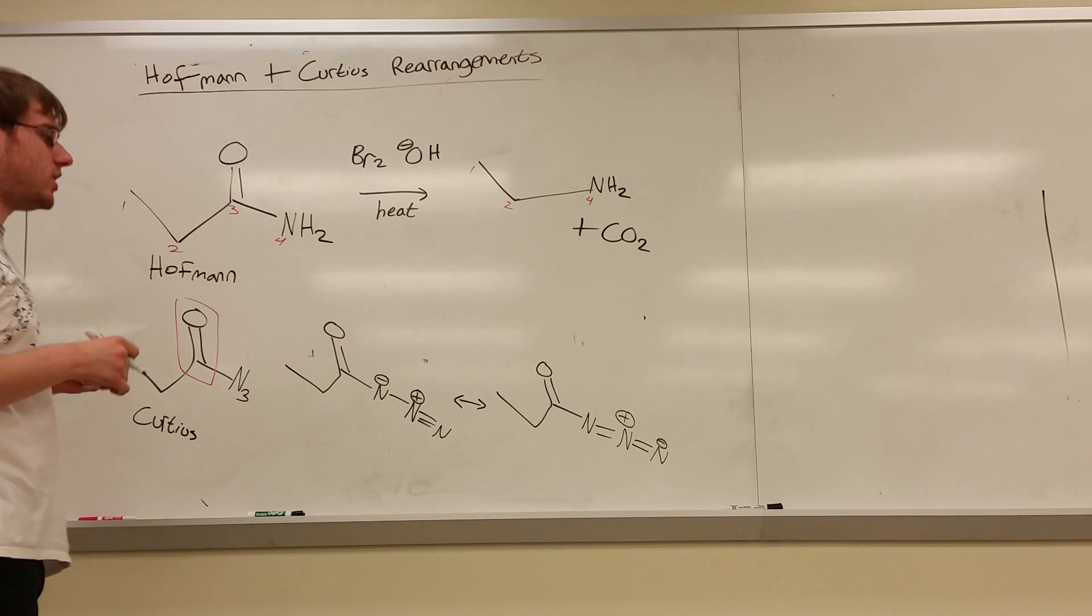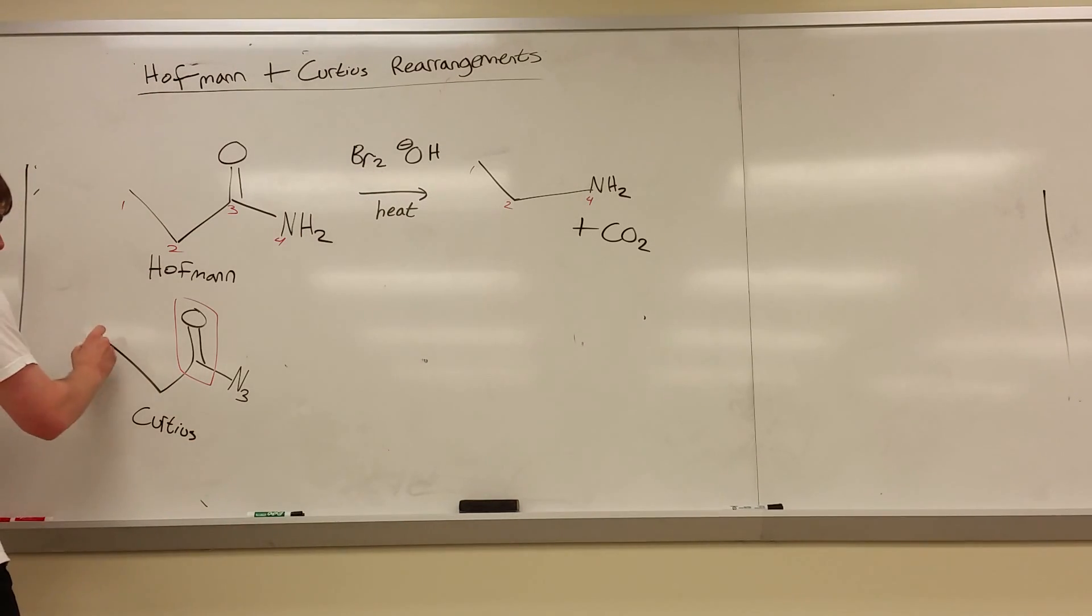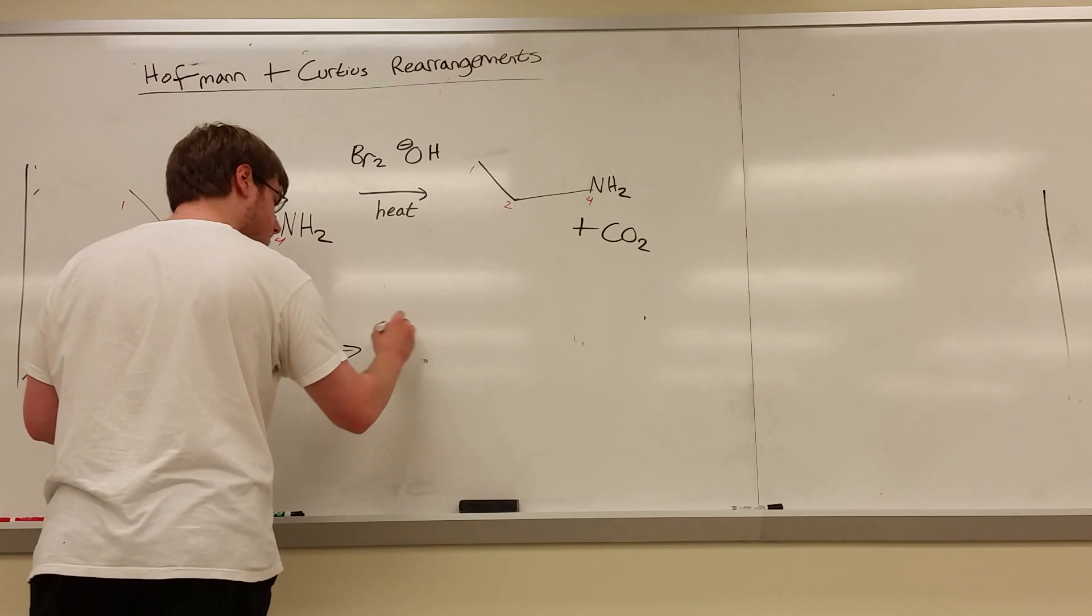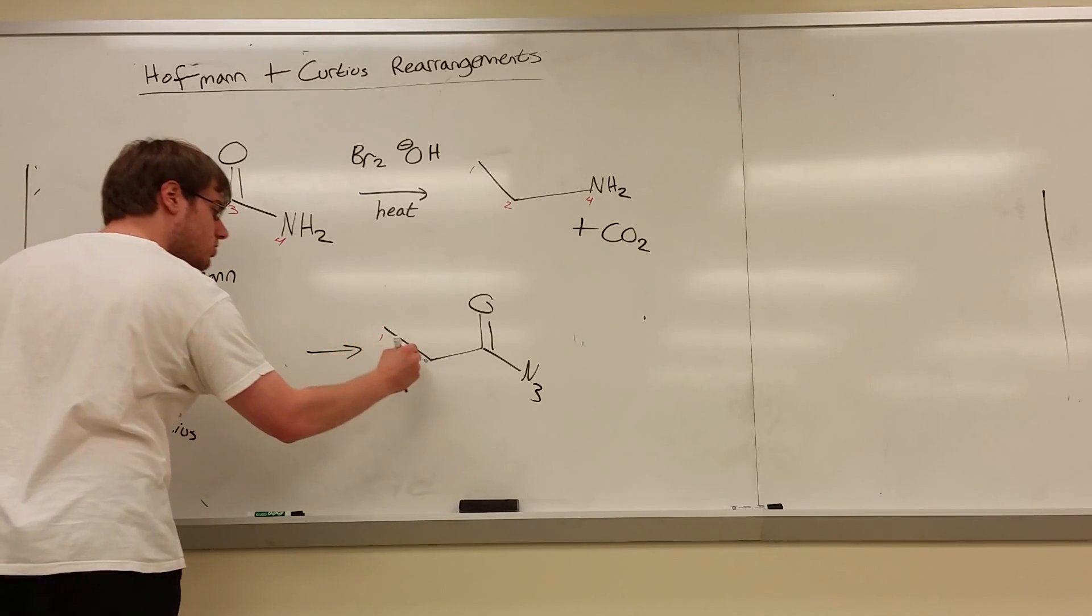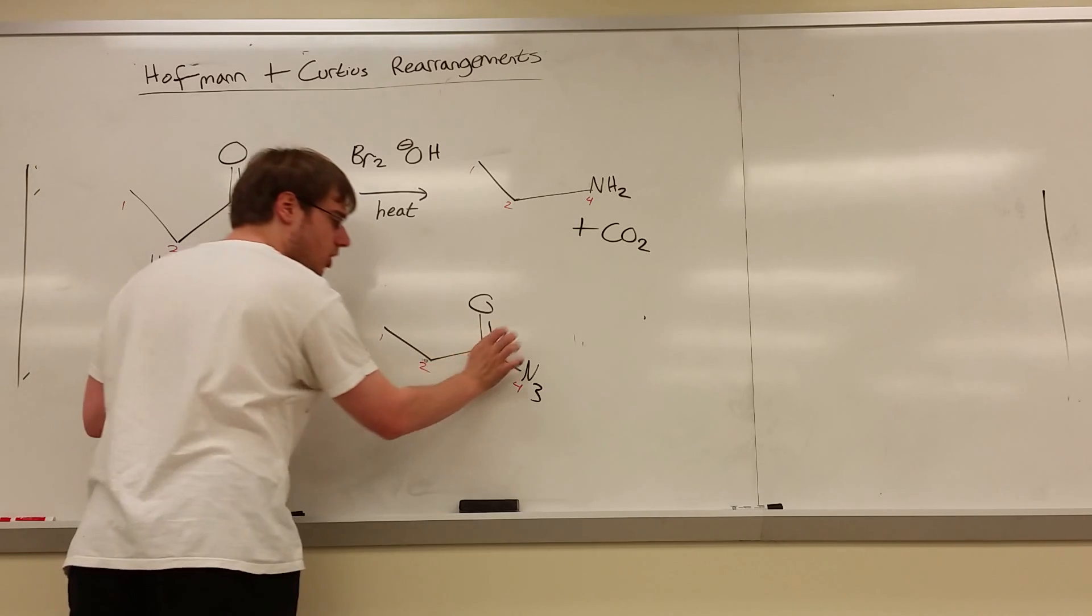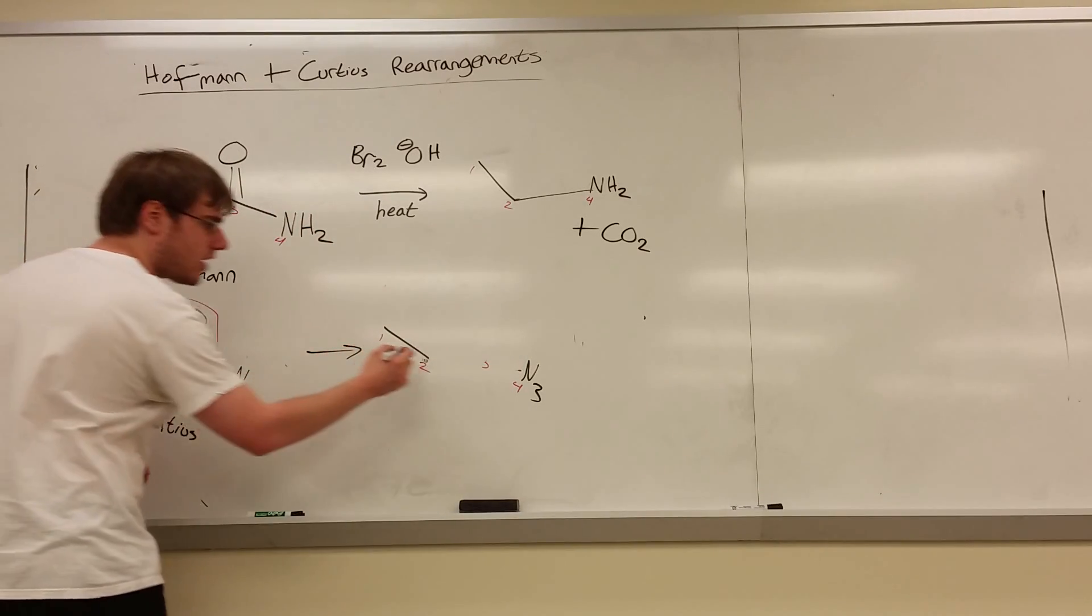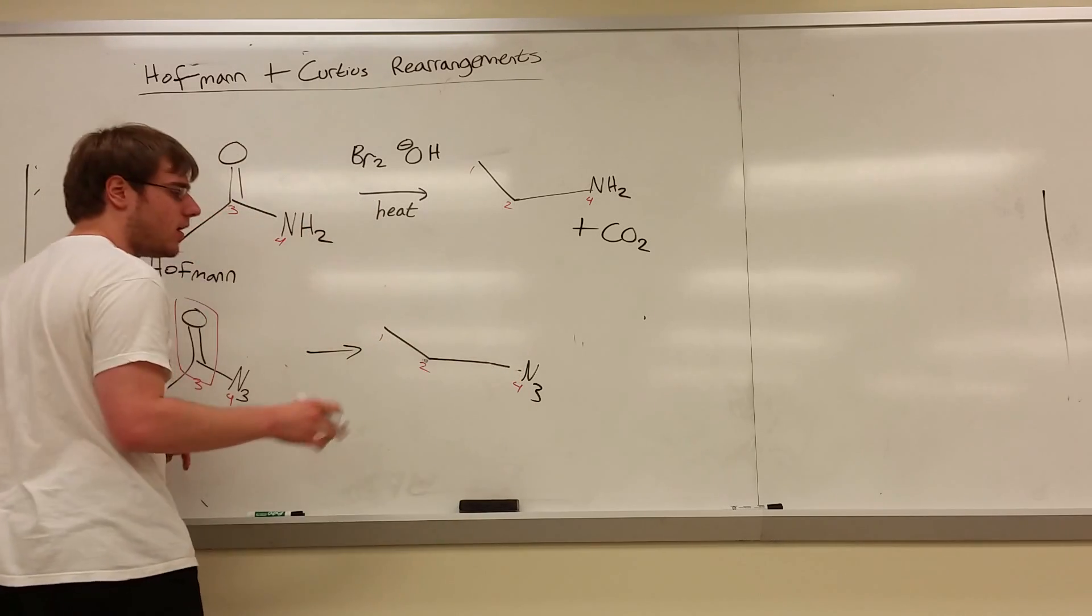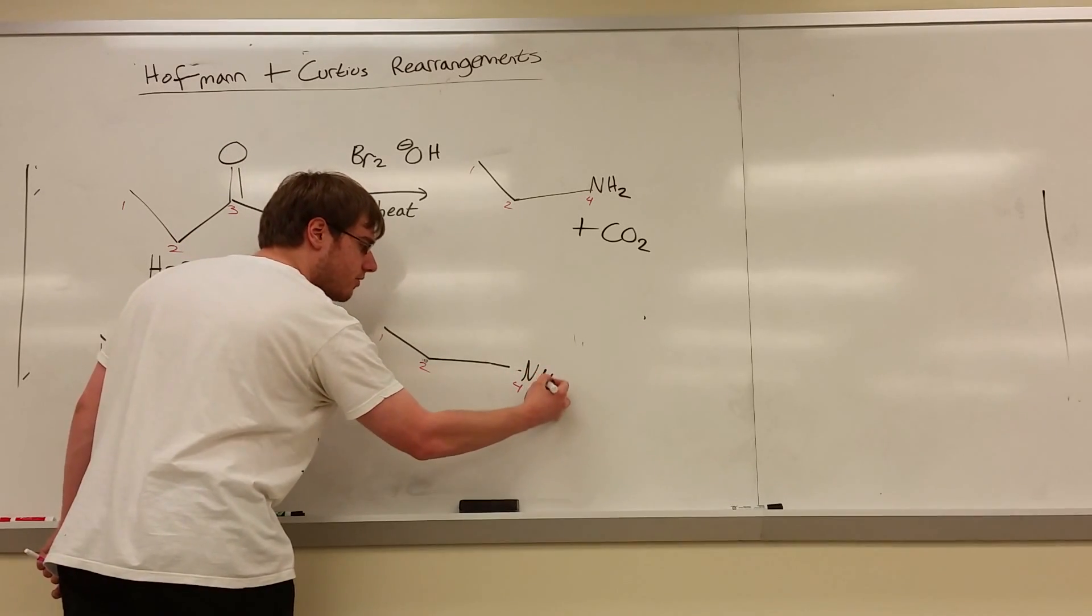In the case of the Curtius rearrangement, it's much the same. Find your C double bond O. Let's number this again: 1, 2, 3, 4. And again, what you're going to do is you're going to erase carbon 3 and its double bond O. Erase the bond that went to them from 4 and 2, and now connect 4 and 2. So the 3 is completely gone. But also, one extra step for the Curtius is that N3 will end up becoming NH2 at the very end.